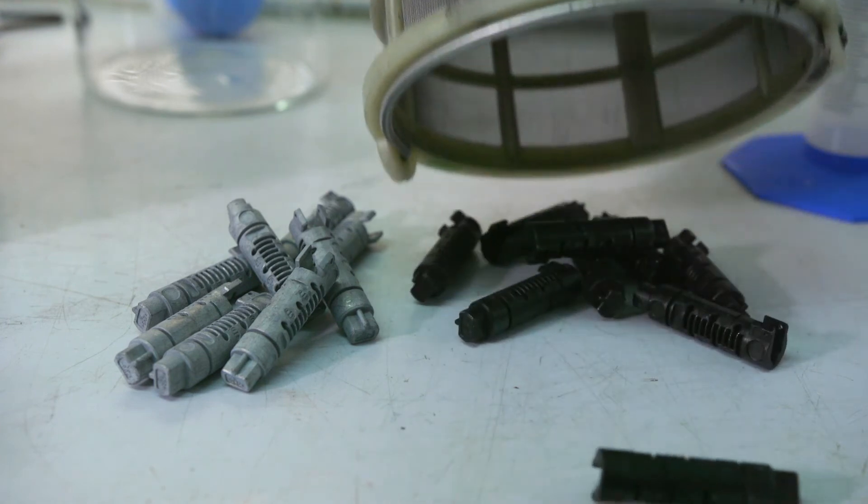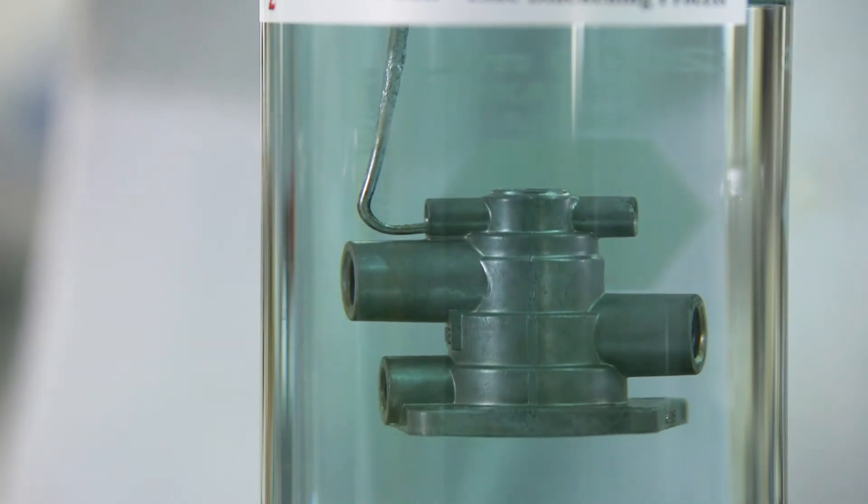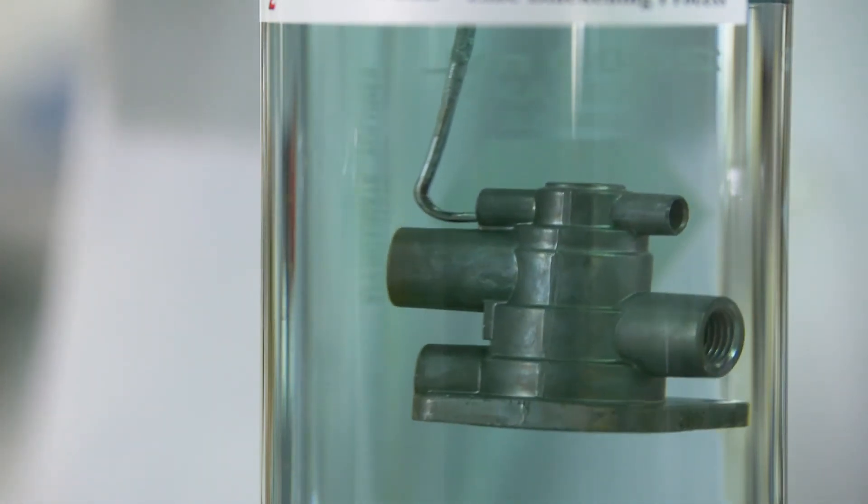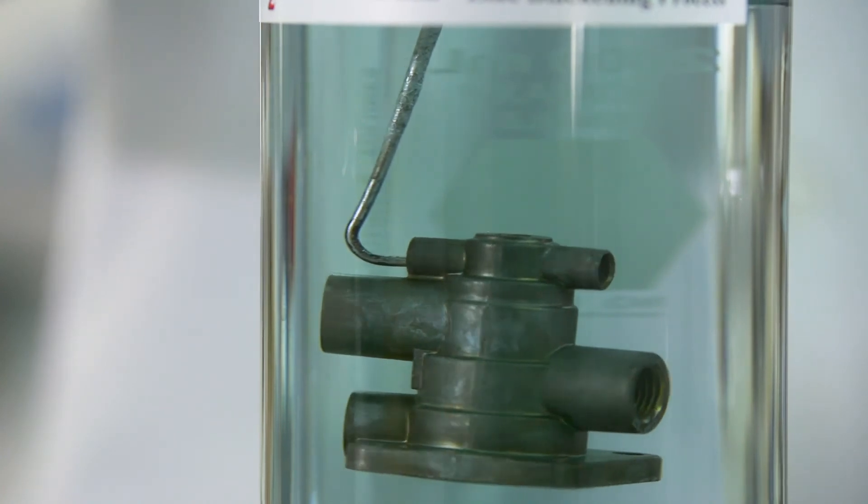With proper maintenance, thorough rinsing and adequate drying, the MetaLine ZMB Trivalent Black Chromate Process can achieve 120 hours to 5% white corrosion based on the ASTM B117 specification.